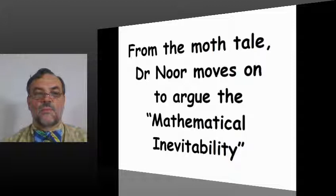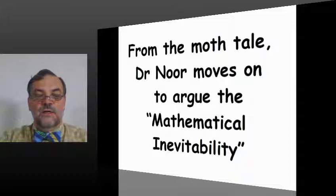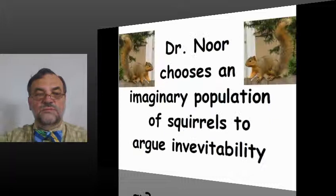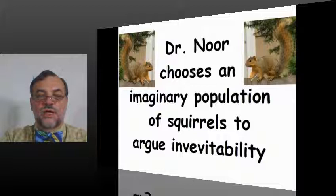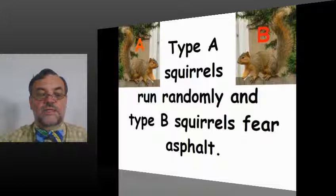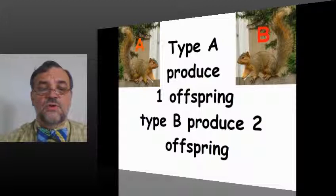From the moth tale, Dr. Noor moves on to argue the mathematical inevitability of evolution. Dr. Noor chooses an imaginary population of squirrels to argue inevitability. Type A squirrels run randomly, and Type B squirrels fear asphalt.